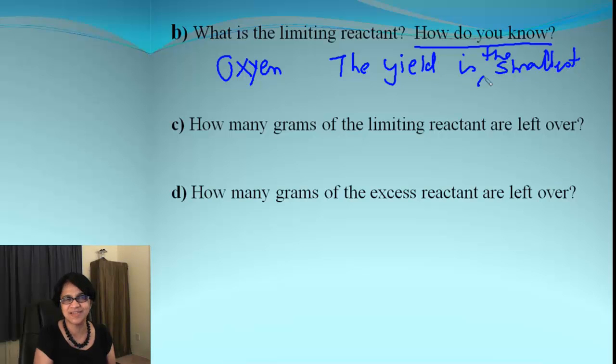How many grams of limiting reactant are left over? Limiting reactant is the one which will all get used up, so what's remaining? None. Zero. No remaining. How many grams of excess reactant is left over? For that we are going to go back to our reaction again. So that's our balanced reaction.